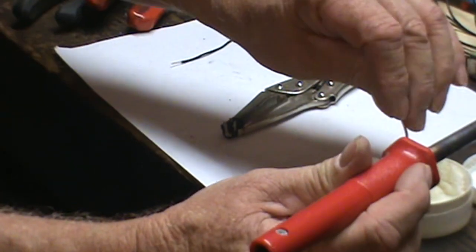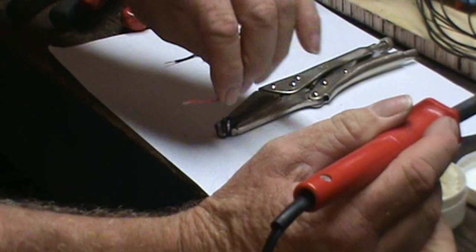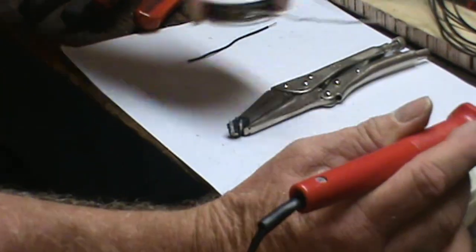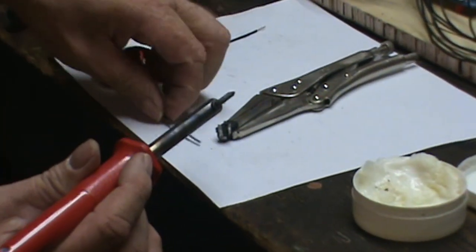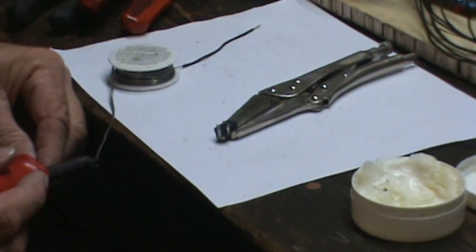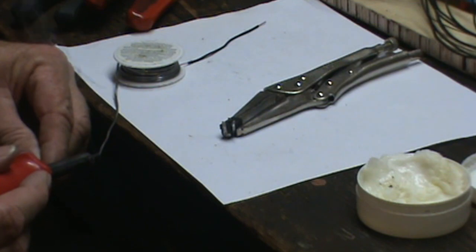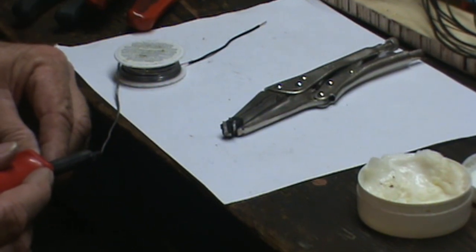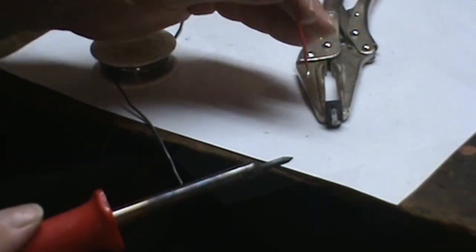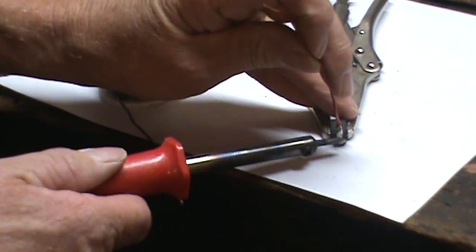So I'm going to take the wire, put some flux on it, put some solder on it, and then we're going to attach it to the back terminal.